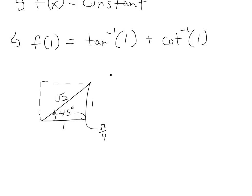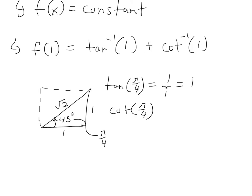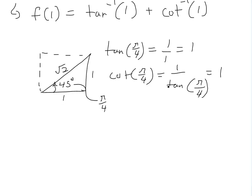So basically, this is the exact trigonometric ratio for π/4. With this, we know that tan is opposite over adjacent, so tan(π/4) equals 1/1, which equals 1. And then cotangent of π/4 is adjacent over opposite, or 1 divided by tan(π/4), which also equals 1.